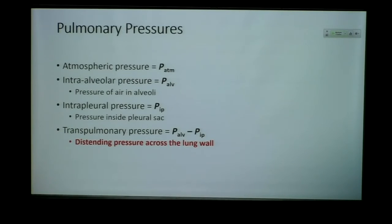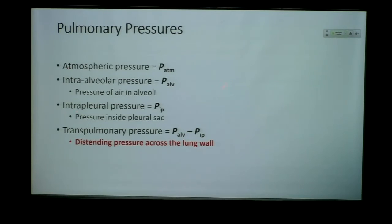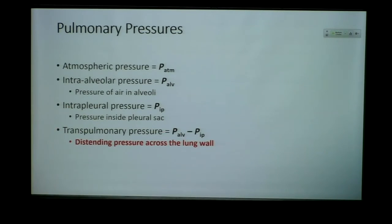The atmospheric pressure, denoted as P-ATM, is the pressure outside in the air that we're breathing. There's also the intra-alveolar pressure — the pressure that's inside the air in our alveoli. And then there's the intra-pleural pressure, which is the pressure in that pleural sac. If you remember, we talked about the pleural cavity, the visceral and pleural layers that form the sac around our lungs, and there's a small amount of pressure in there called the intra-pleural pressure.